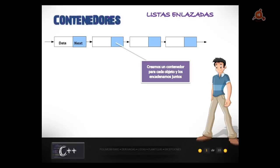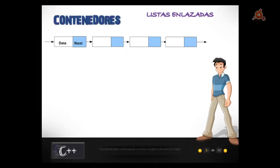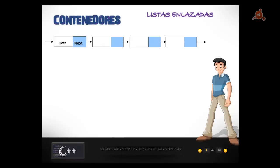Estos contenedores enlazados entre sí se llaman nodos. El primero de los nodos en la lista es llamado head (cabeza) y el último nodo de la lista es llamado tail (cola).